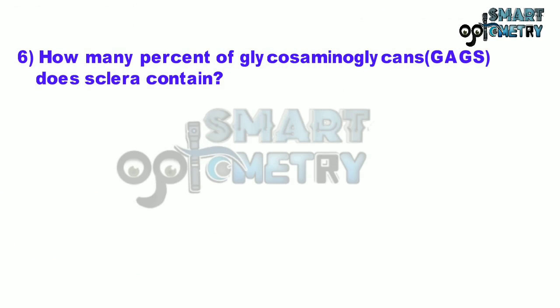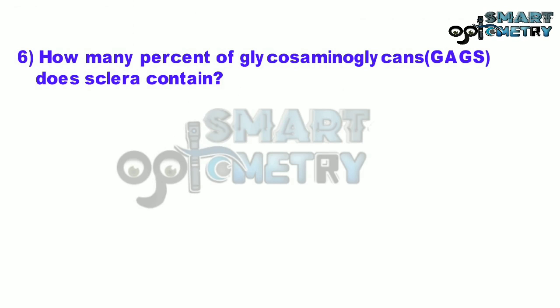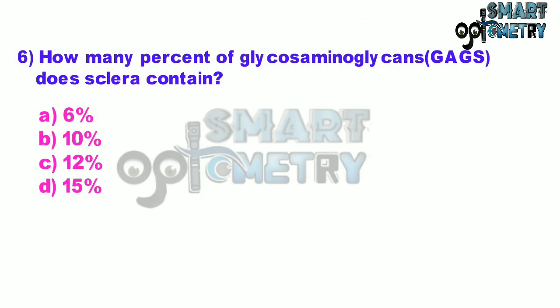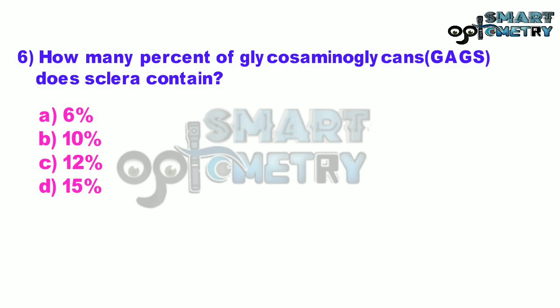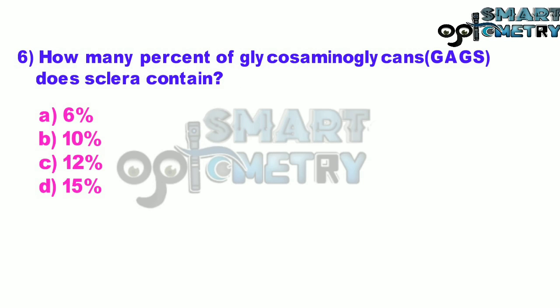Question number six: how many percent of glycosaminoglycans does the sclera contain? A: 6%, B: 10%, C: 12%, D: 15%.